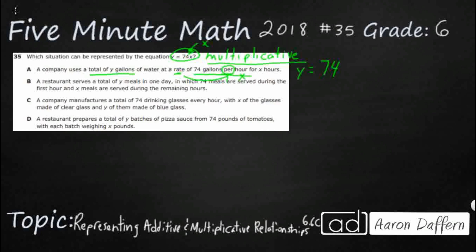So x hours, 74 gallons per hour for x hours. That might be our answer. Look at that right there. We've got two different clues, the rate and the word per, showing us it is a multiplicative relationship. But of course, let's double check. Let's make sure B, C, and D are incorrect.